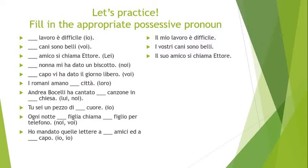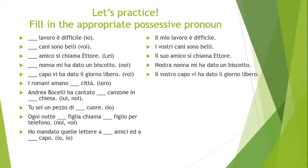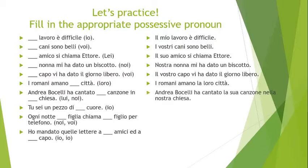'Nonna' is a close family member, so did you remember to leave out the article? 'Nostra nonna mi ha dato un biscotto' — our grandma gave me a cookie. No article with close family members — there's your first trick. Next: 'voi' — il vostro capo vi ha dato il giorno libero — your boss gave you all a free day. Then: i Romani amano la loro città — 'città' is feminine singular, so 'la loro città.' 'Loro' doesn't change.